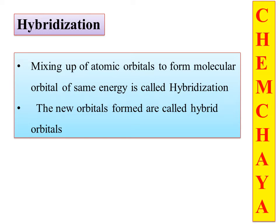Mixing up of atomic orbitals to form molecular orbitals of the same energy is called hybridization. The new orbitals that have been formed are called hybrid orbitals. Atoms do not simply combine — atomic orbitals undergo hybridization, which is the mixing up of atomic orbitals before forming molecular orbitals.